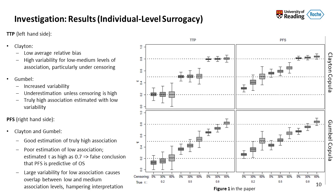For individual-level surrogacy results: on the left, results for time-to-progression as surrogate; on the right, for progression-free survival. Top plots show correct model specification (same copula for data generation and fitting); bottom plots show the impact of misspecification. Despite very small numbers of trials and patients, results under correct specification are fairly encouraging, with the three boxes representing different levels of censoring.